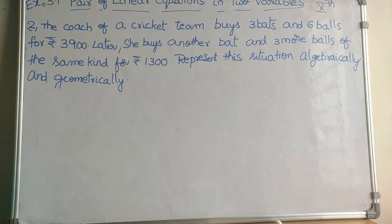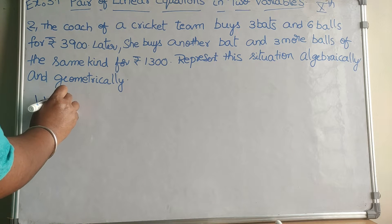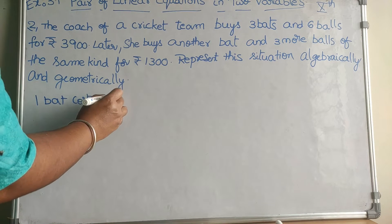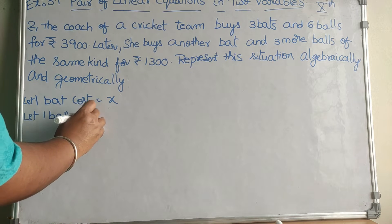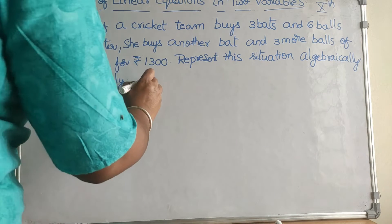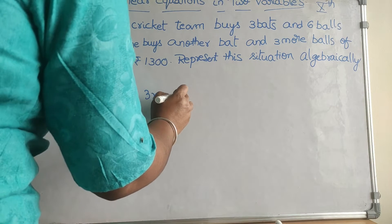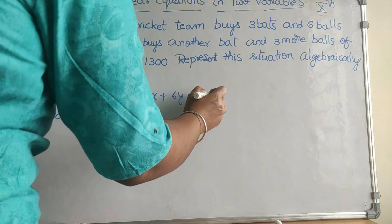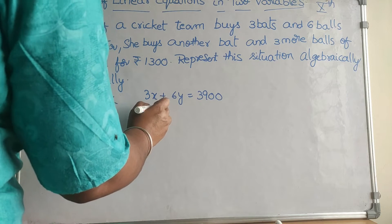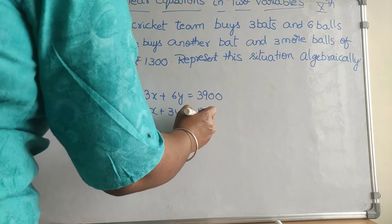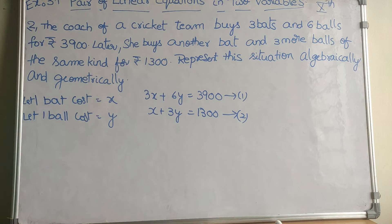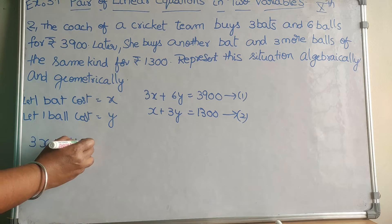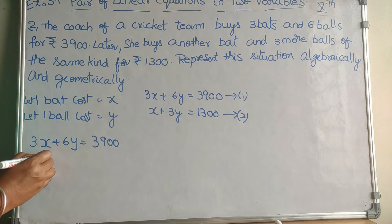Expressing this algebraically: let one bat cost x and one ball cost y. From the first condition, three bats plus six balls equals 3900, so 3x + 6y = 3900. From the second condition, one bat plus three balls equals 1300, so x + 3y = 1300. This is equation one and equation two.